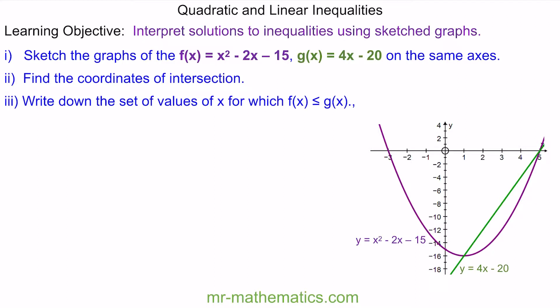We'll create a quadratic equation, knowing that this y value and this y value are equal. So x squared minus 2x minus 15 is equal to 4x minus 20. We'll take away the 4x and add 20 to both sides. So x squared minus 6x plus 5 is 0.